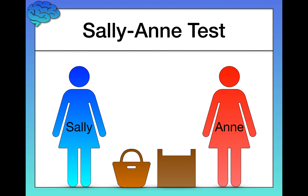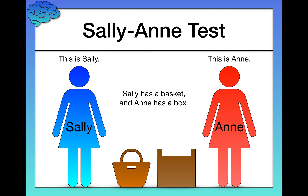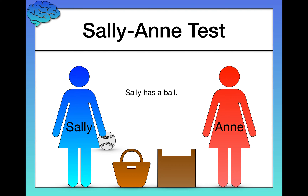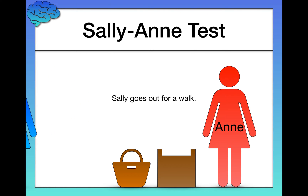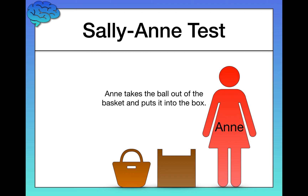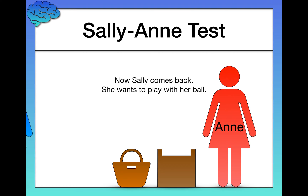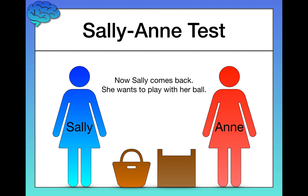I'm going to walk you through it just as I would with a child. This is Sally, and this is Ann. Sally has a basket, and Ann has a box. Sally has a ball. She puts the ball into her basket. Sally goes out for a walk. Ann takes the ball out of the basket and puts it into the box. Now Sally comes back. She wants to play with her ball. And here's the key question: where will Sally look for her ball?